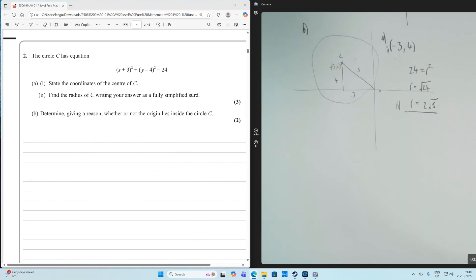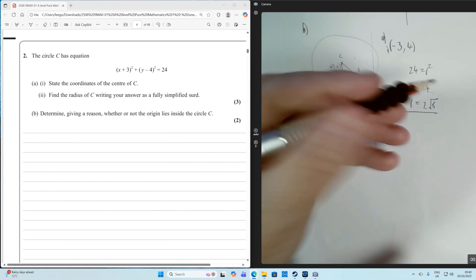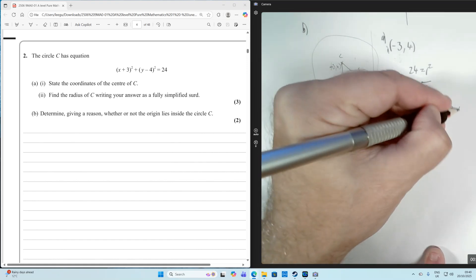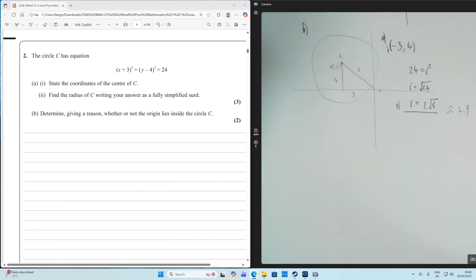The circle has a radius of 2√6, which is approximately 4.9. I've drawn a circle with roughly this radius. The question asks: is the origin inside the circle?